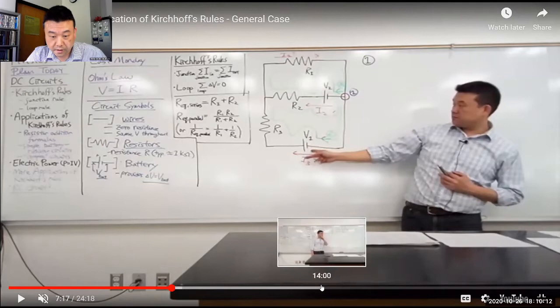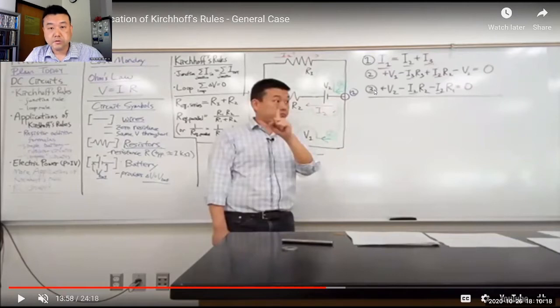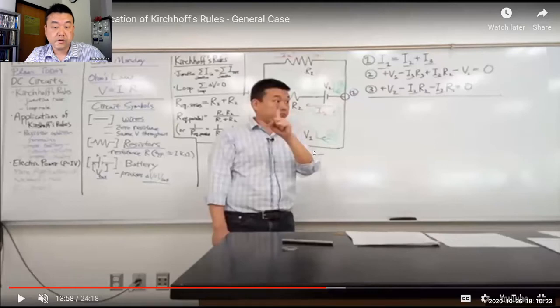And when I'm done, I think I'm done writing here. Yeah. So I come up with the three equations, which can be used to solve the circuit, as in solve these unknown values of current, I1, I2, I3.